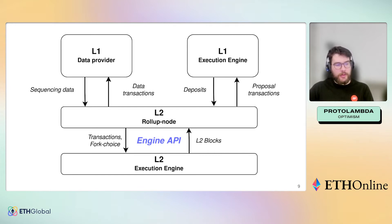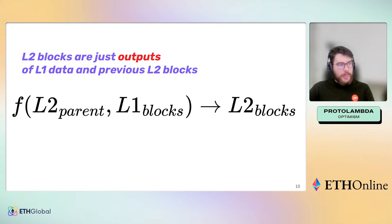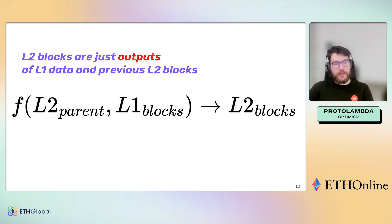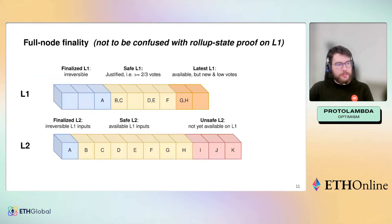The layer two is designed the same way as layer one, with a consensus layer and an execution layer. If you think about the layer two state transition function, it's really just the process of incorporating more layer one data to extend the layer two, and then we can prove those layer two outputs on layer one.